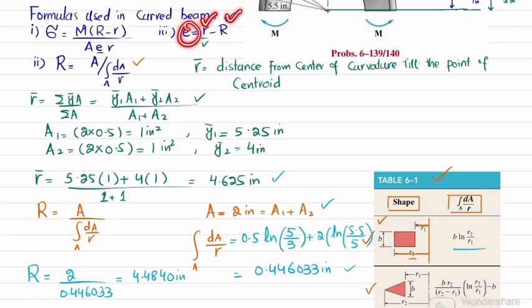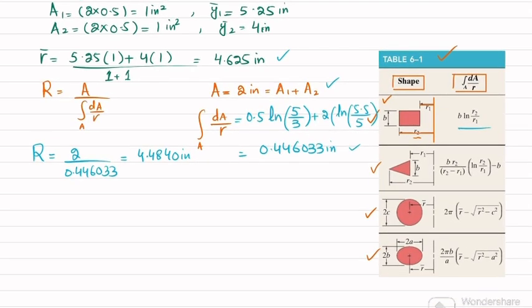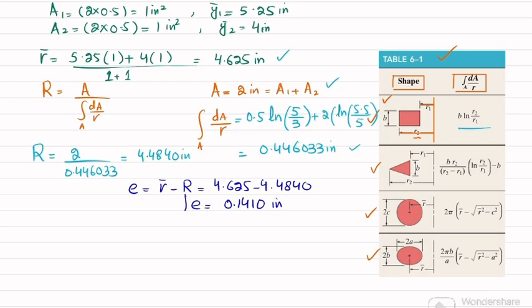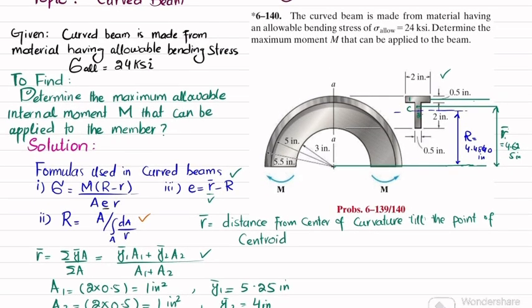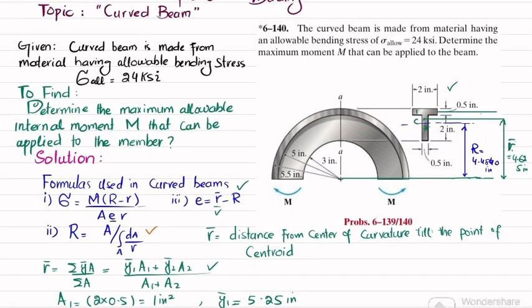Now we find the eccentricity: e = R̄ − R = 4.625 − 4.4840 = 0.1410 inches. With R̄, R, and e known, we can now determine the maximum allowable internal moment.